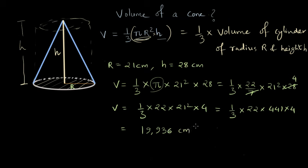And what will be the unit? Unit is going to be centimeters cubed. Remember we are trying to compute the volume. And whenever we are computing volume we represent the volume in terms of the cube of the unit of the side lengths. And that's why the volume of the cone in this case is 19,936 centimeters cubed.